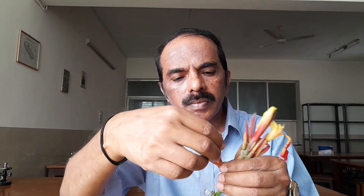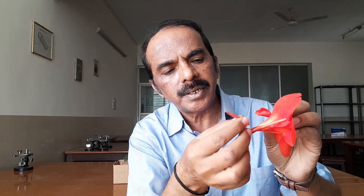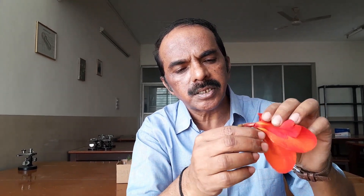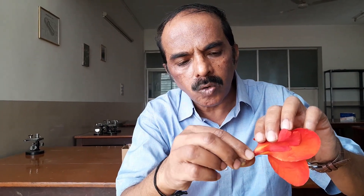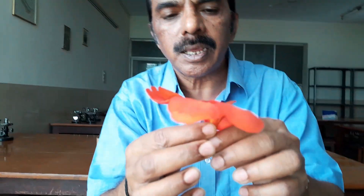These are the tepals. There are six tepals in two whorls of three each — these are the inner tepals and these are the outer tepals — so there are six tepals in total.